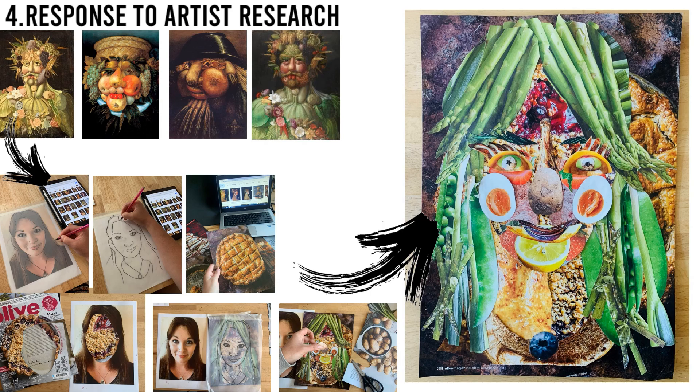For this response to Giuseppe Arcimboldo, I noted his key features being semi-abstract, the fact that his work is based on fruit and vegetables, and the way that he uses natural tones and realistic painting. I decided to take his concept of using fruit and veg to build a portrait, but rather than using oil paint as he had done, I chose to use a collage process — using fruit and veg magazines to cut up and collate. I've achieved a similar effect using an alternative process.